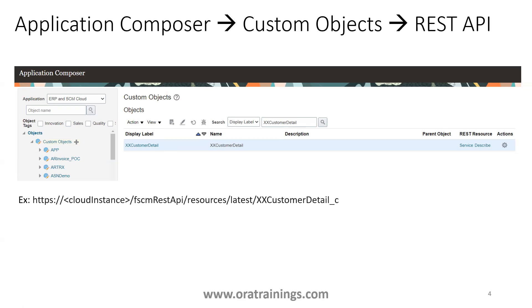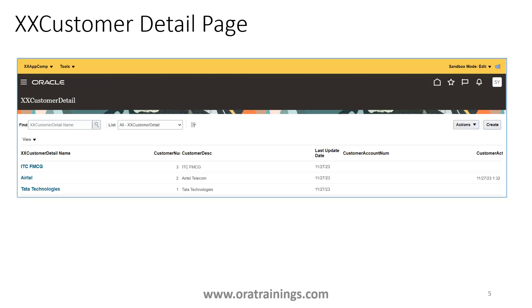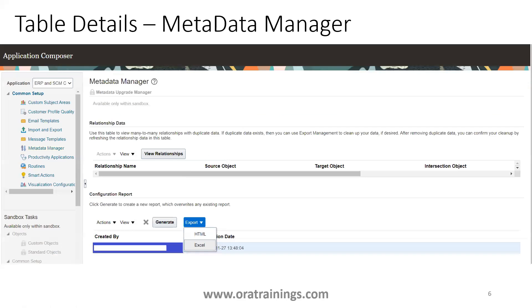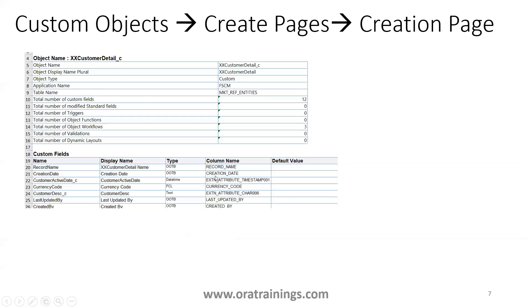Once you have the REST API, you can perform all CRUD operations. If you want to find the table details, go to Common Setup, open Metadata Manager, and generate the report. From that report you can find out your custom object name, the table name where data is stored, all the column names, and understand what each column represents and what data it stores.